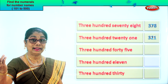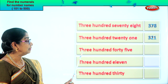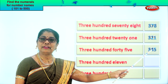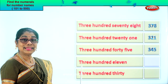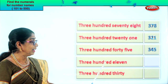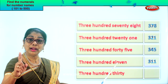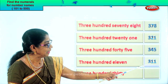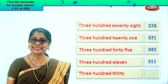Three in the hundreds place, four in the tens place, five in the ones place — three, four, five: three hundred forty-five. Good. Let's take the next number name: three hundred eleven. Three in the hundreds place, one in the tens place, one in the ones place — three hundred eleven.